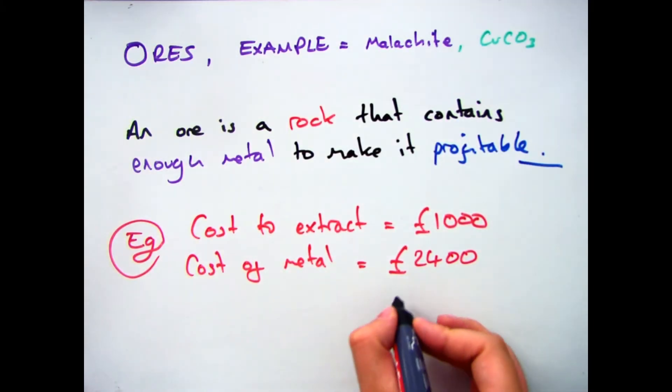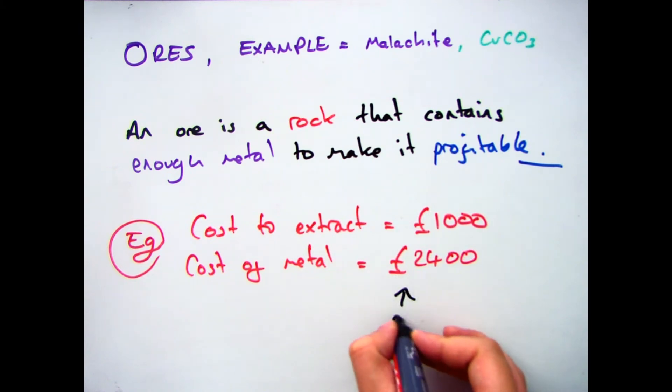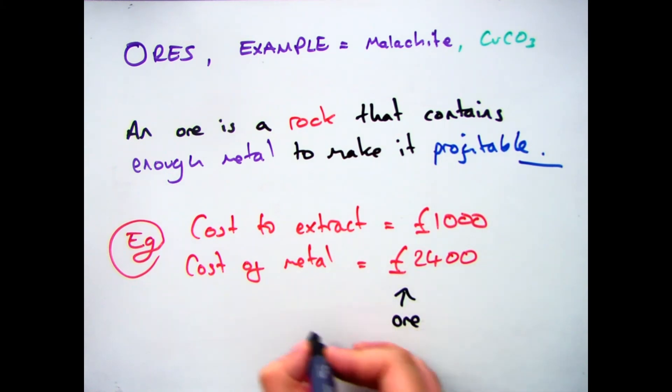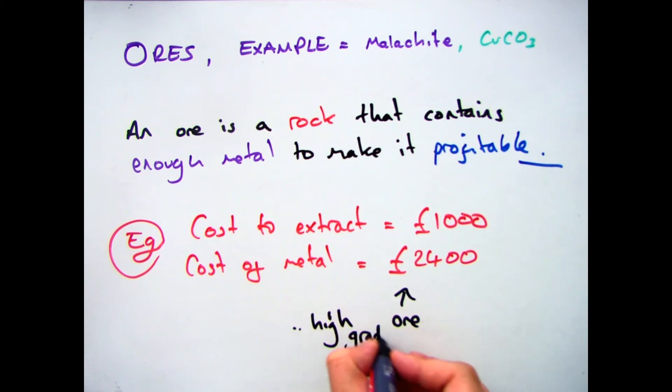If I have one, however, that still costs £1,000 to extract, but I'm going to get £2,400 out of it, I'm going to make a profit. Therefore we class that as an ore, and in particular a high-grade ore.